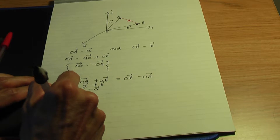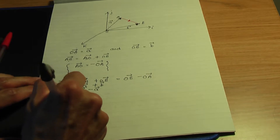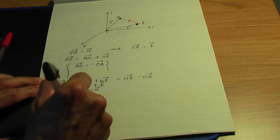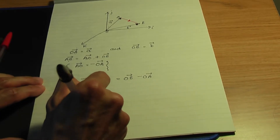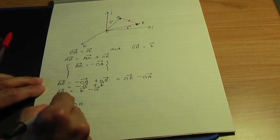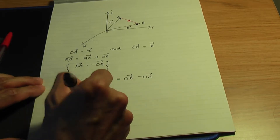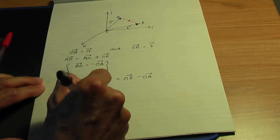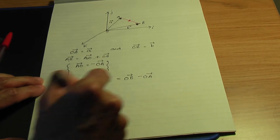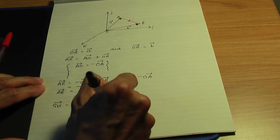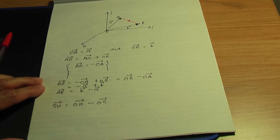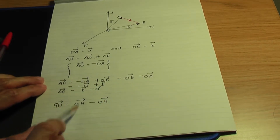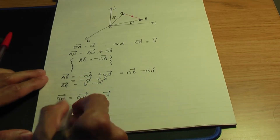To think about it quickly: vector AB will be O of the second letter, so the second letter is B, minus O of the first letter, which is A. So the vector AB will be OB minus OA. In the same way, suppose if you want to work out the vector GH — GH will be O of the second letter H, minus O of the first letter G. So vector GH is OH minus OG.